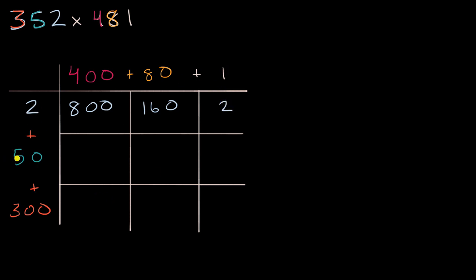And then we can multiply 50 times these. So what's 50 times 400? Well, 5 times 4 is 20. And then we have another one, two, three zeros. So that's 20,000. 50 times 80. 5 times 8 is 40. And then we have two zeros. And then we have 50 times 1, which is, of course, going to be equal to 50.